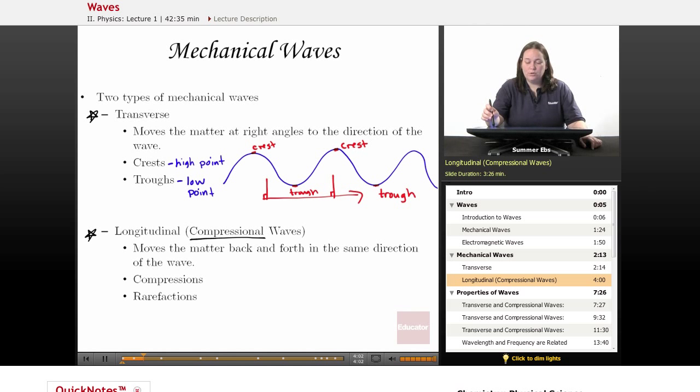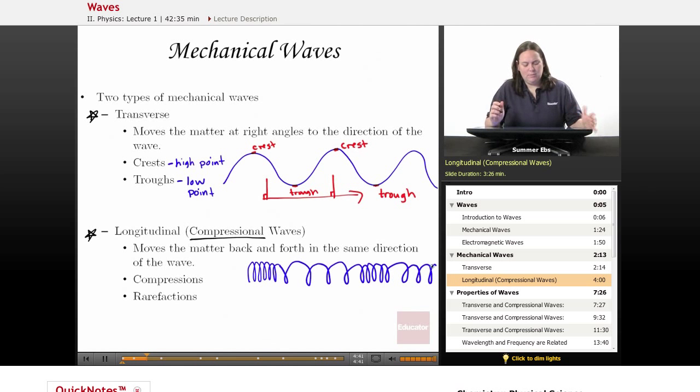A longitudinal wave, or compressional wave, moves the matter back and forth in the same direction as the wave. A compressional wave is easiest to draw looking like a slinky. It's kind of wide, then spreads out a little.